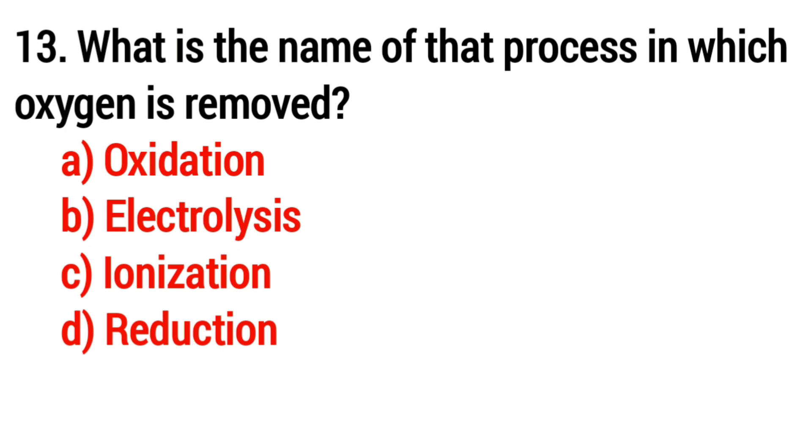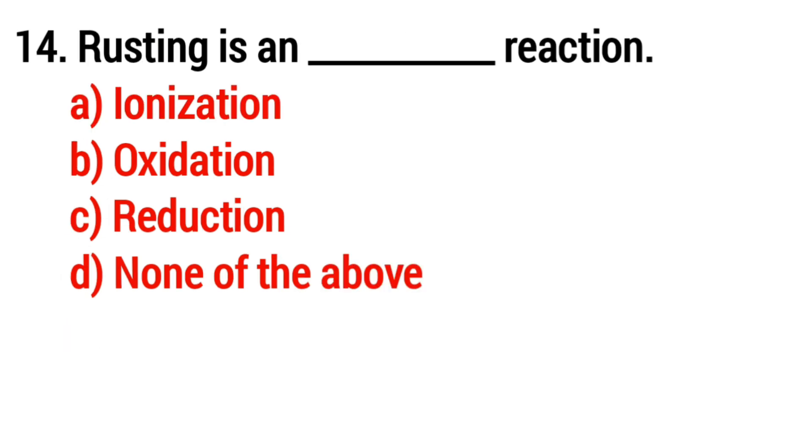Question number 13: What is the name of the process in which oxygen is removed? Answer: option D, reduction. Question number 14: Rusting is a blank reaction.